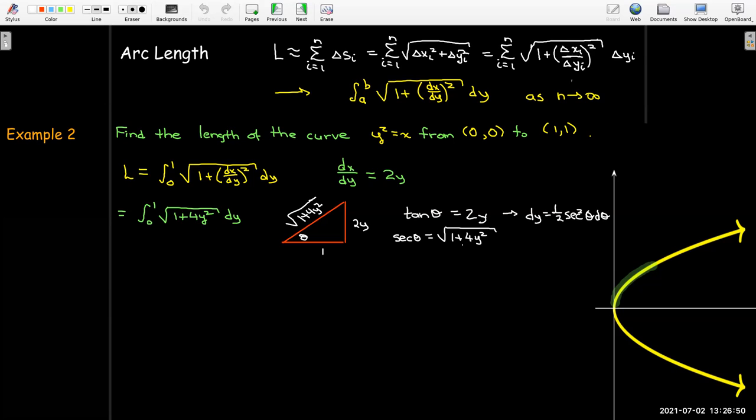So if I write this integral in terms of θ, I'll get 1/2 integral sec³(θ) dθ, and you can see my strategy here is I'm not going to bother to change the bounds. I'm just going to find the antiderivative, then I'll change my variable back to y and use the original bounds in terms of y.